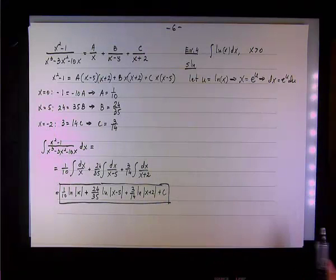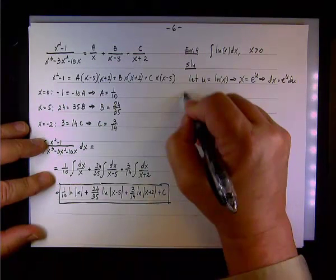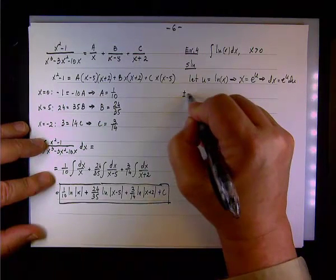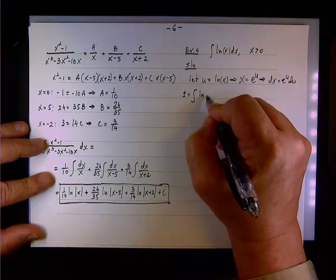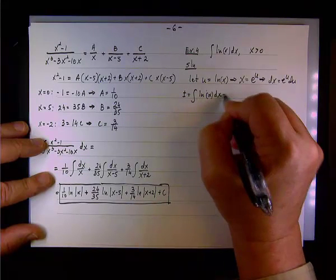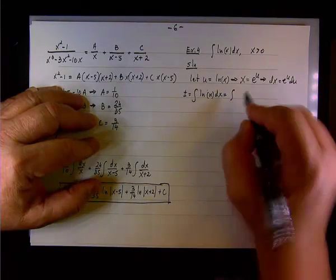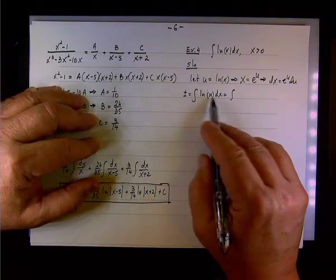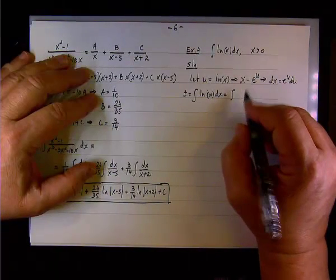If u equals the natural log of x, then x equals e to the u. After the substitution, we start with the integral of the natural log of x dx, which becomes the integral of u times e to the u du.